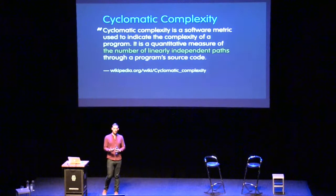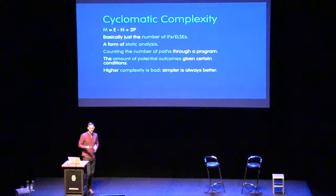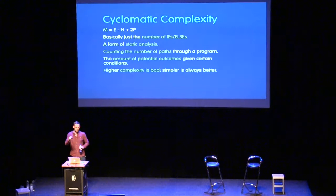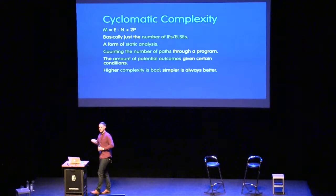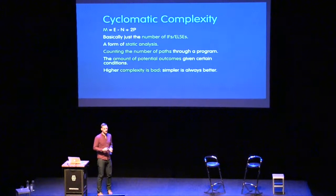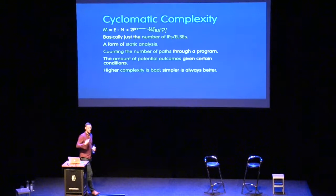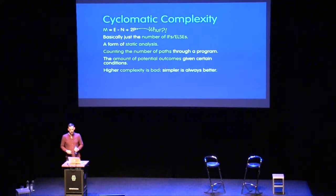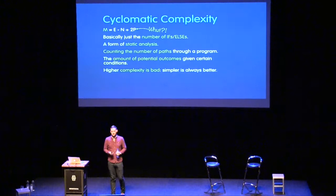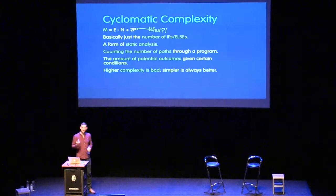Basically, it counts the number of branches on a decision tree — put very simply, it just counts the number of ifs and elses in a function. Every if or else contributes to the cyclomatic complexity of that code. All that matters right now is: it's just the number of ifs and elses, the amount of potential outcomes given certain conditions. As with many things, the more complex, the worse — keep things as simple as possible.